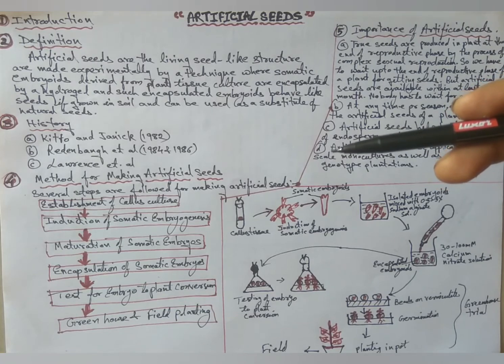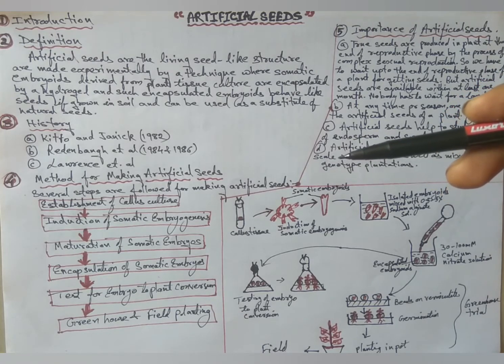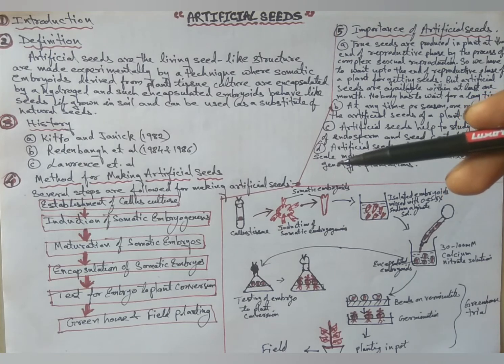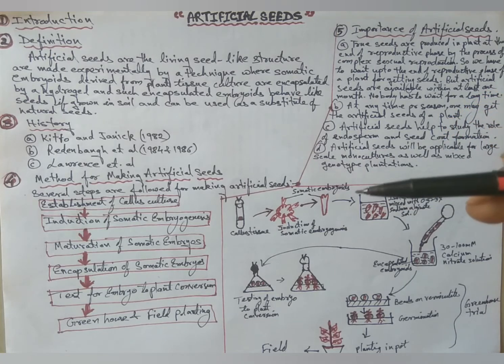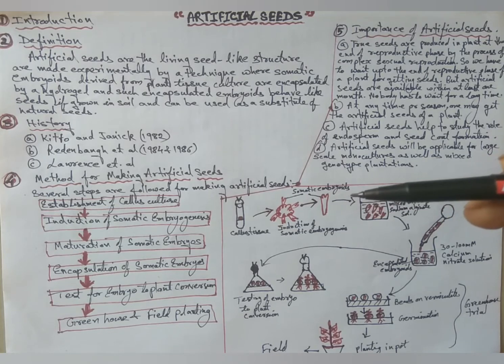The concept of artificial seed has been developed from somatic embryos which are formed adventitiously from in vitro culture somatic tissues, meaning diploid cells.